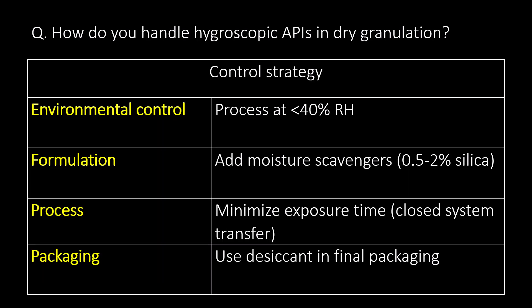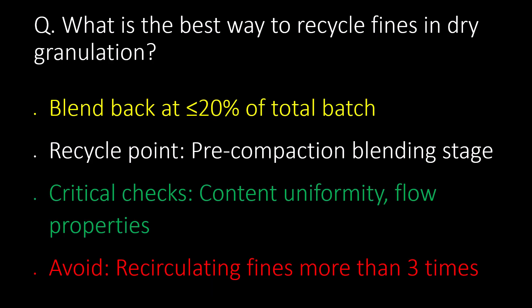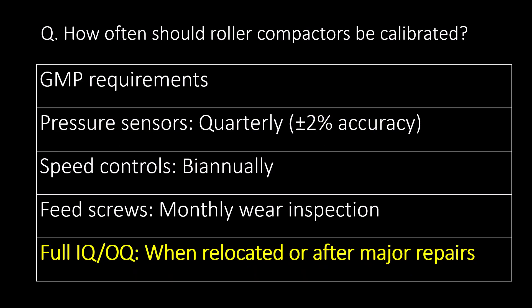How do you handle hygroscopic APIs in dry granulation? We can implement a control strategy that includes environmental control, formulation control, process controls, and packaging controls. What is the best way to recycle fines in dry granulation? Blend back at less than 20% of total batch at the pre-compression blending stage. Critical checks include content uniformity, flow properties, and avoid recirculating fines more than 3 times.